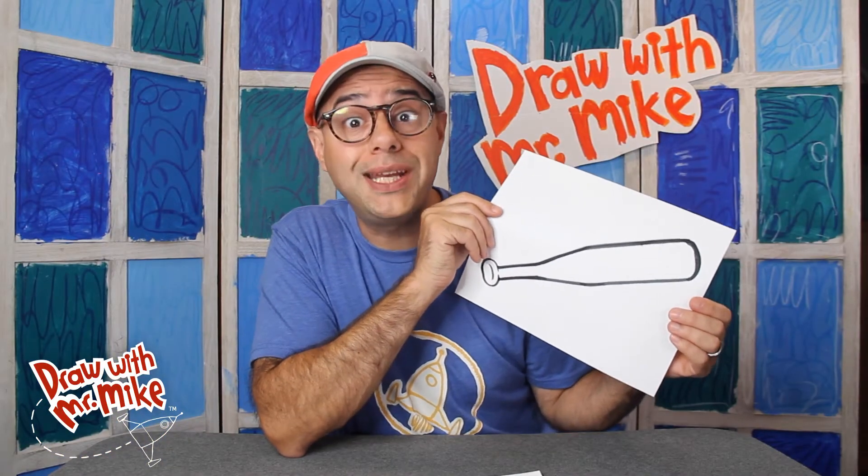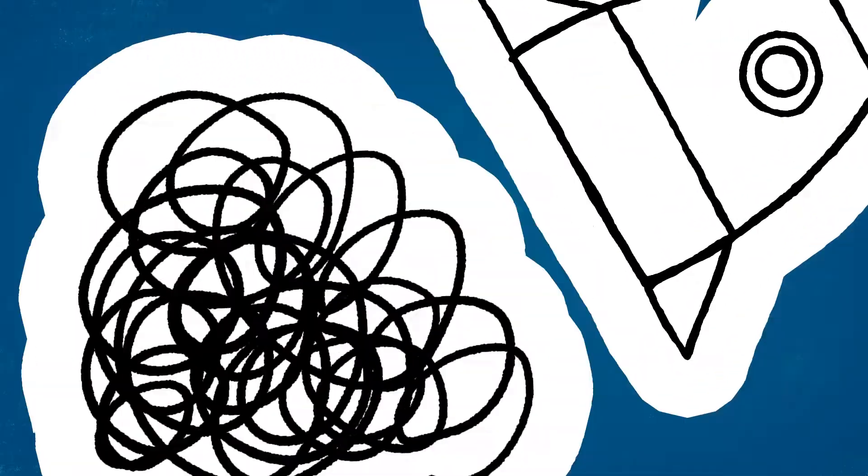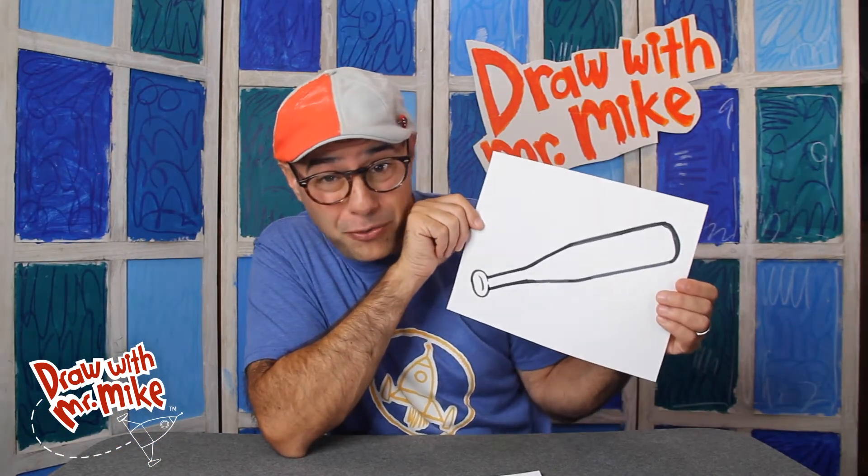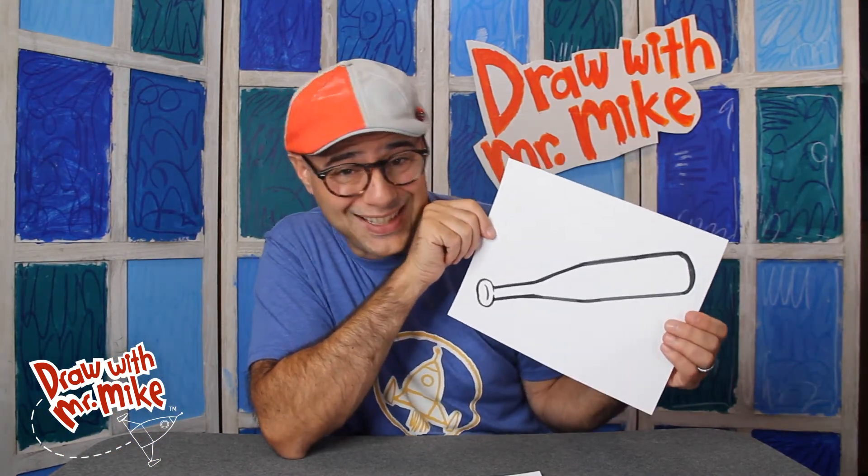To draw a baseball bat, we only need two basic lines and shapes. Can you believe that? We'll be using an arc and a line. Only two basic lines and shapes to draw this baseball bat. That's fantastic. Okay, let's get started drawing.